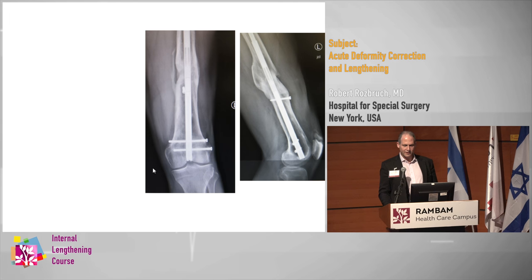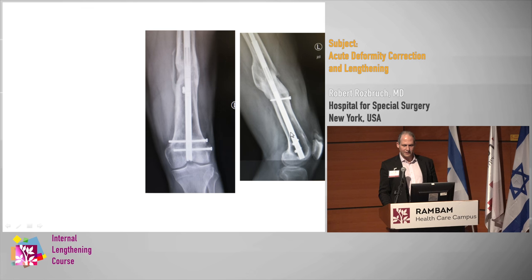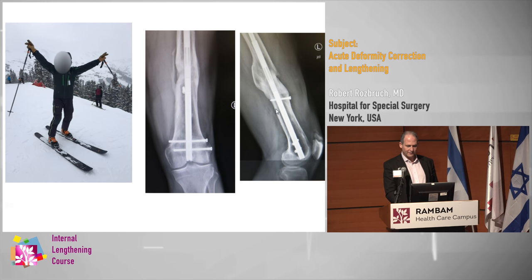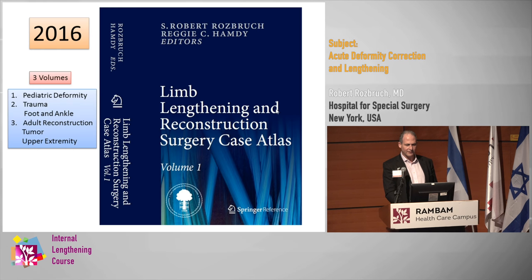Because I agree that straight nails are better than curved nails, and because the nail is riding along the posterior cortex, you don't need a posterior blocking screw — there's no room for it to go into a procurvatum or flexion deformity. You can see the patient happy and back to his active lifestyle.